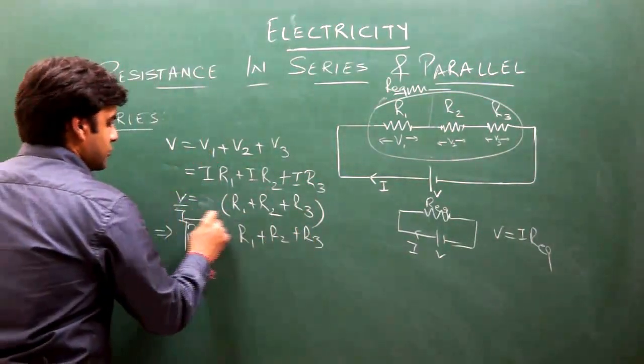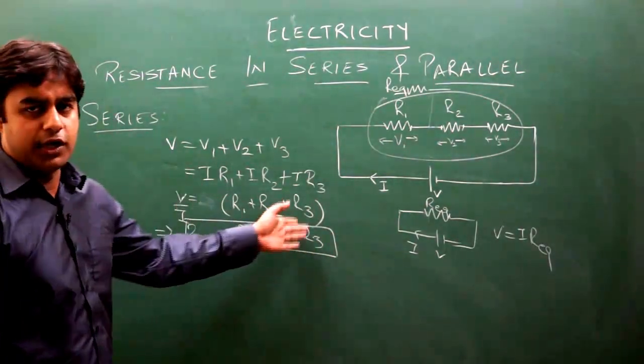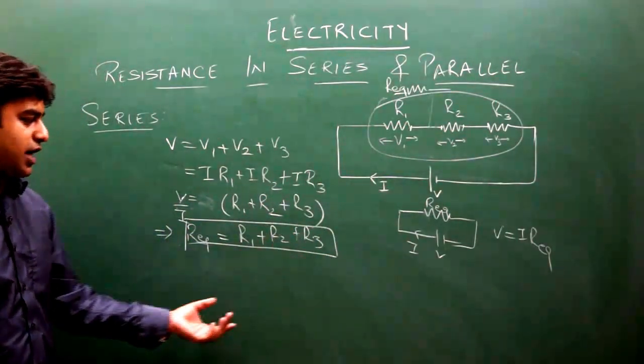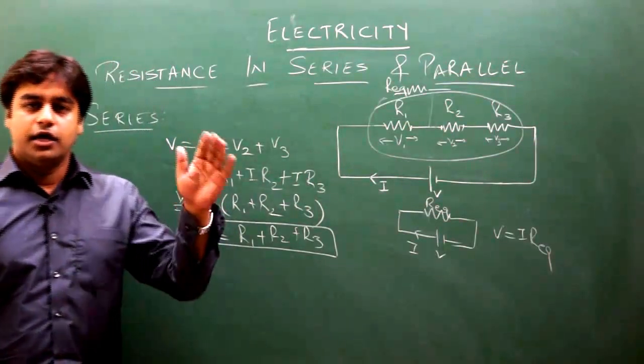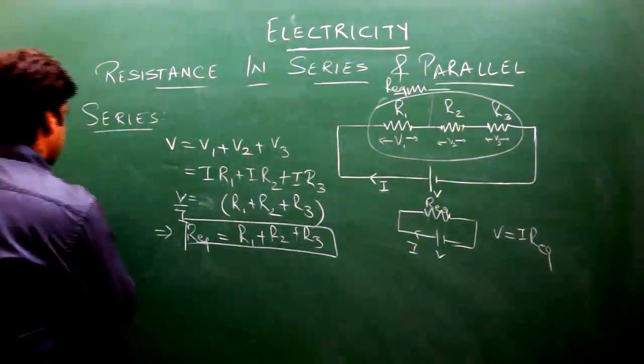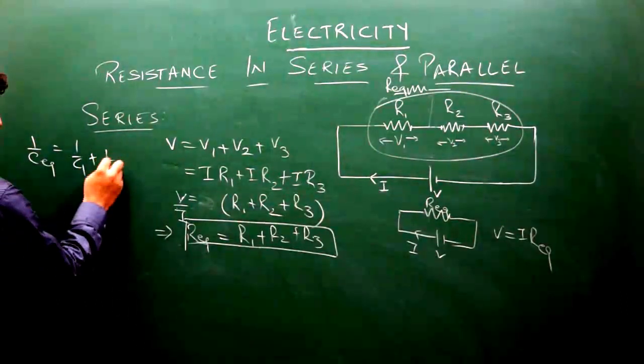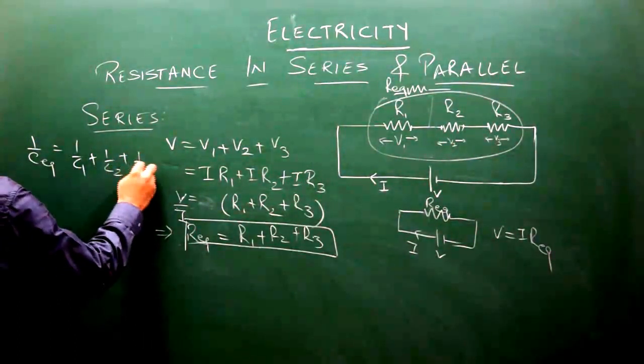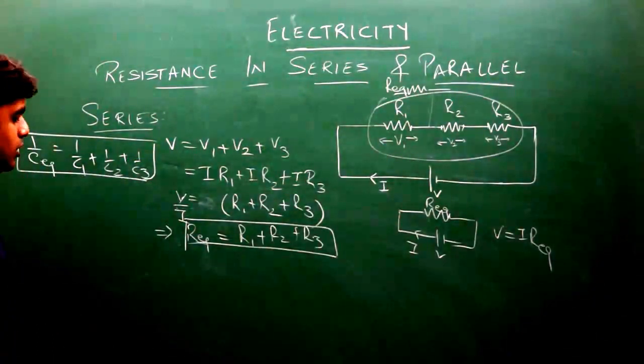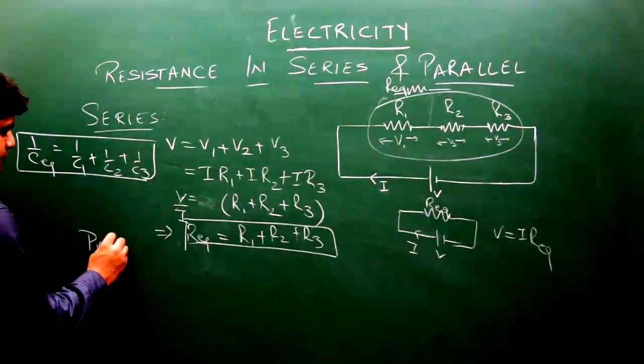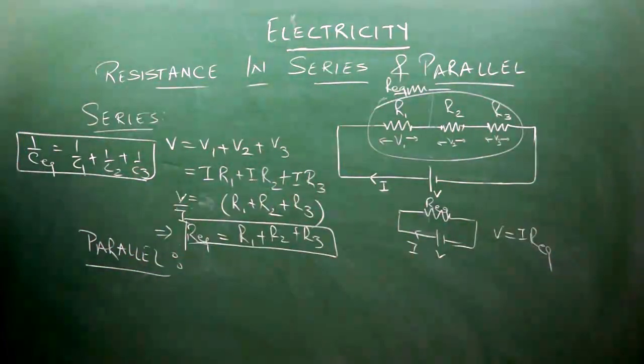plus R3. You can see in this case, resistance adds up. Whereas in capacitance, in electrostatics, the property was inverse: 1/C_equivalent = 1/C1 + 1/C2 + 1/C3 for capacitors in series. Now let us move to parallel combination.